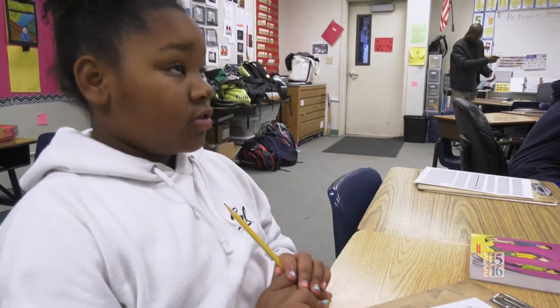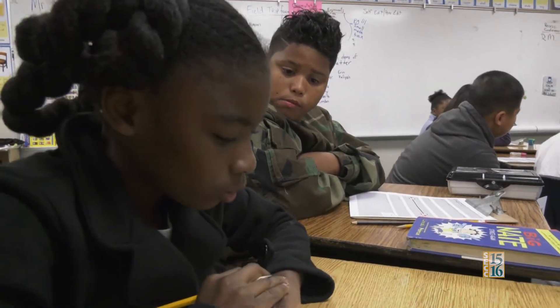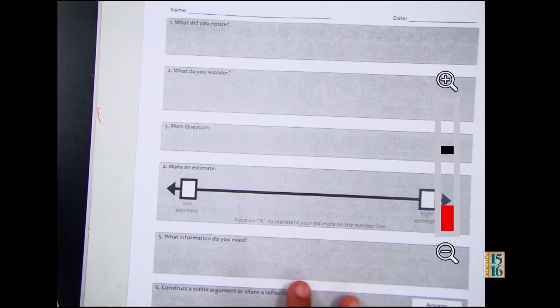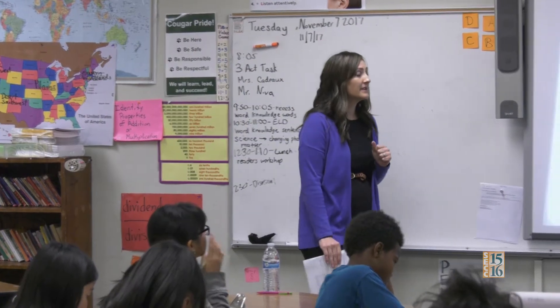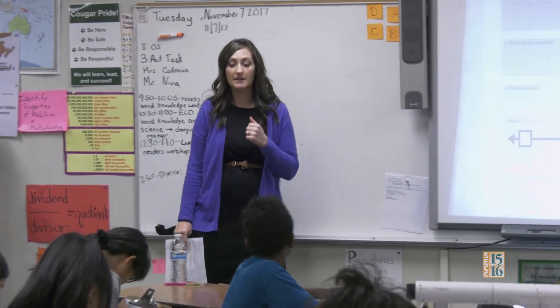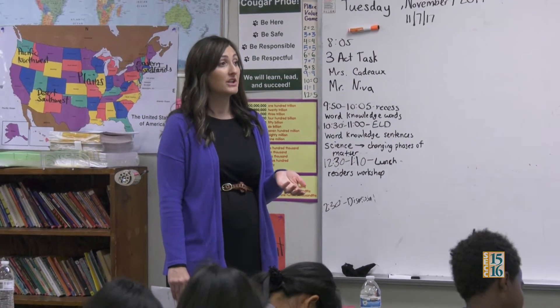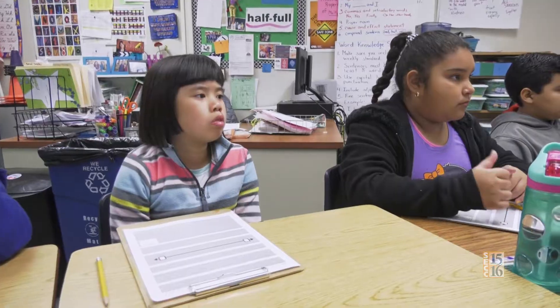The purpose of a three-act task is to get students to really reason about mathematics and to problem solve, engaging them in a real life situation. Share out something you noticed or something your partner shared. Vivian — a lump of sugar. Thumbs up to Vivian if you had a similar noticing.